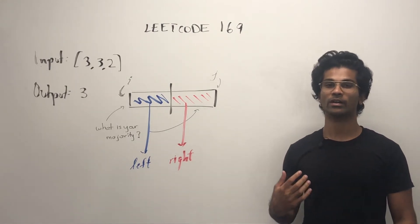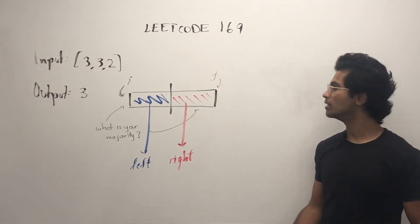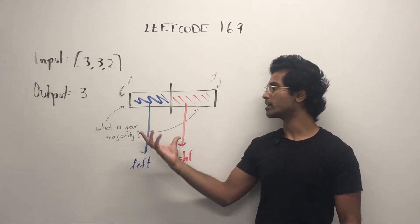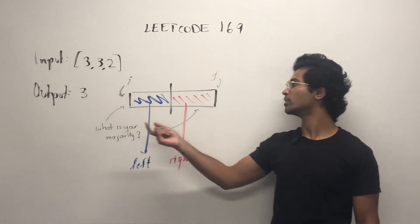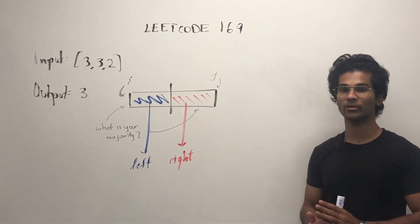Because we're doing divide and conquer, this is how we'll approach it. What we do is we take the input array and we split it, so let's say i is the left pointer, j is the right pointer, and we split it down the middle.